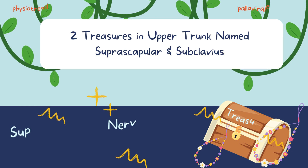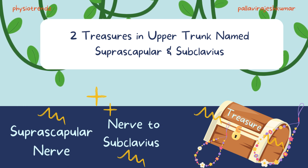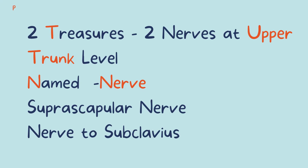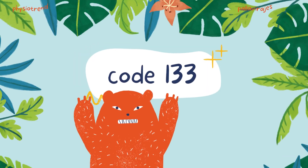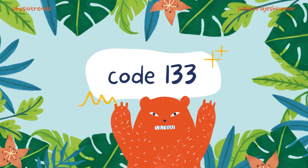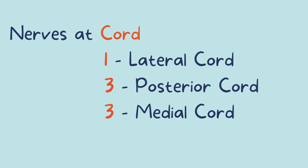'2 treasures in upper trunk named suprascapular and subclavius.' The 2 T's stand for 2 nerves at the upper trunk level, and N is for nerve. Code 133: 133 refers to the nerves at the cord level — 1 at the lateral cord, 3 at the posterior cord, and 3 at the medial cord.